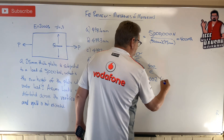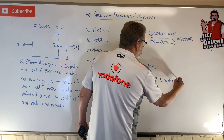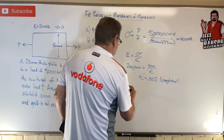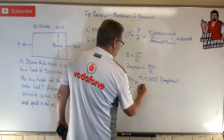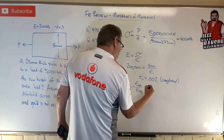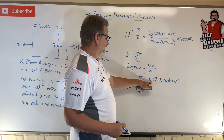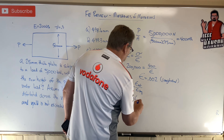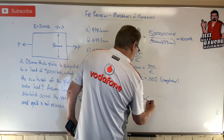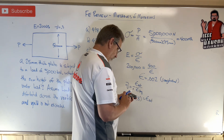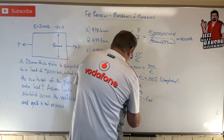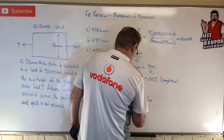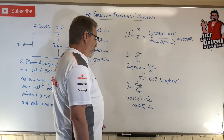That strain is the longitudinal strain — in the direction of loading. But I need the strain in the lateral direction. Poisson's ratio equals negative lateral strain divided by longitudinal strain. I have the longitudinal strain and I know Poisson's ratio, so: strain lateral equals negative 0.002 times 0.3 — that's the Poisson's ratio — which equals negative 0.0006 millimeters per millimeter.